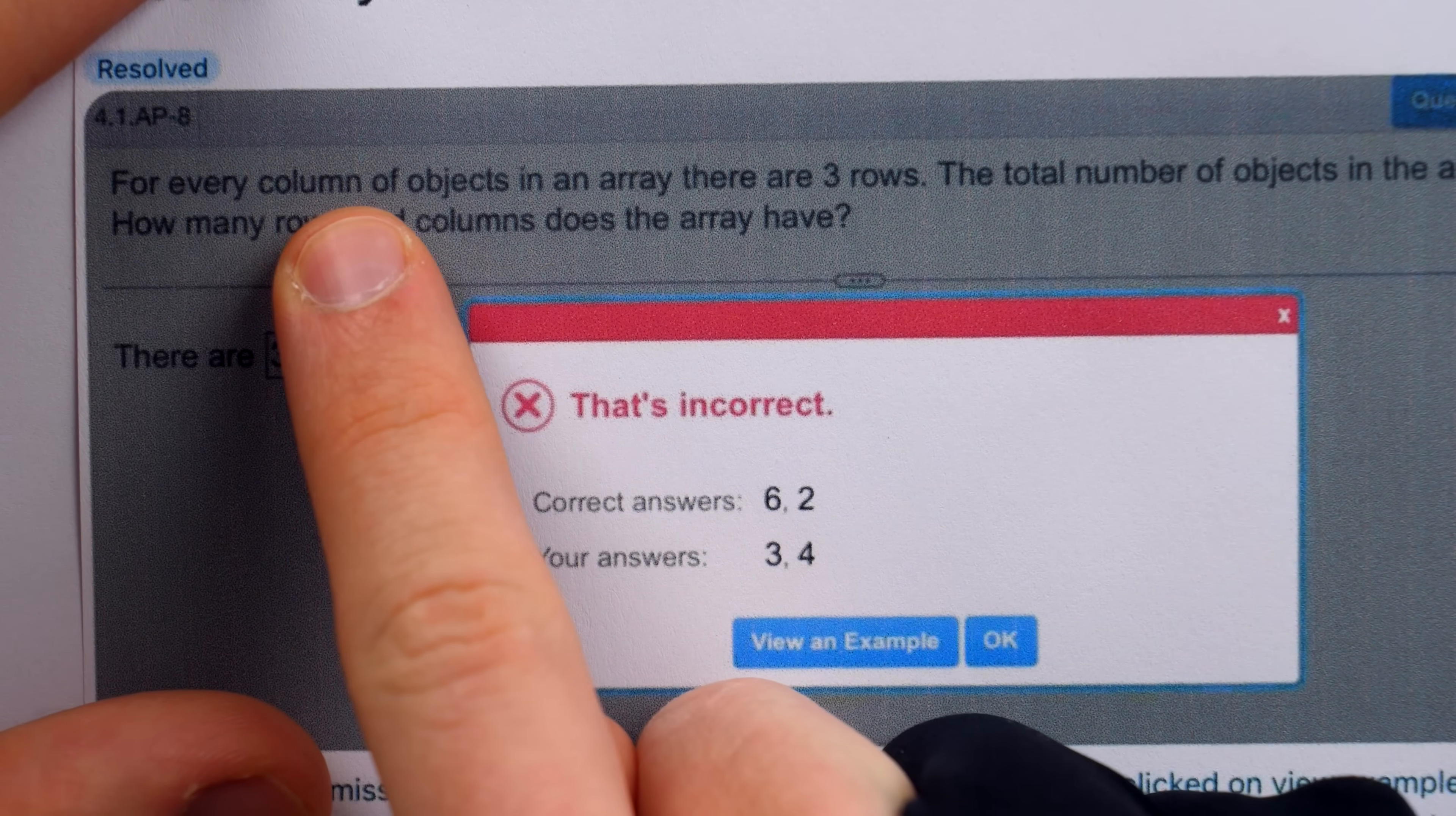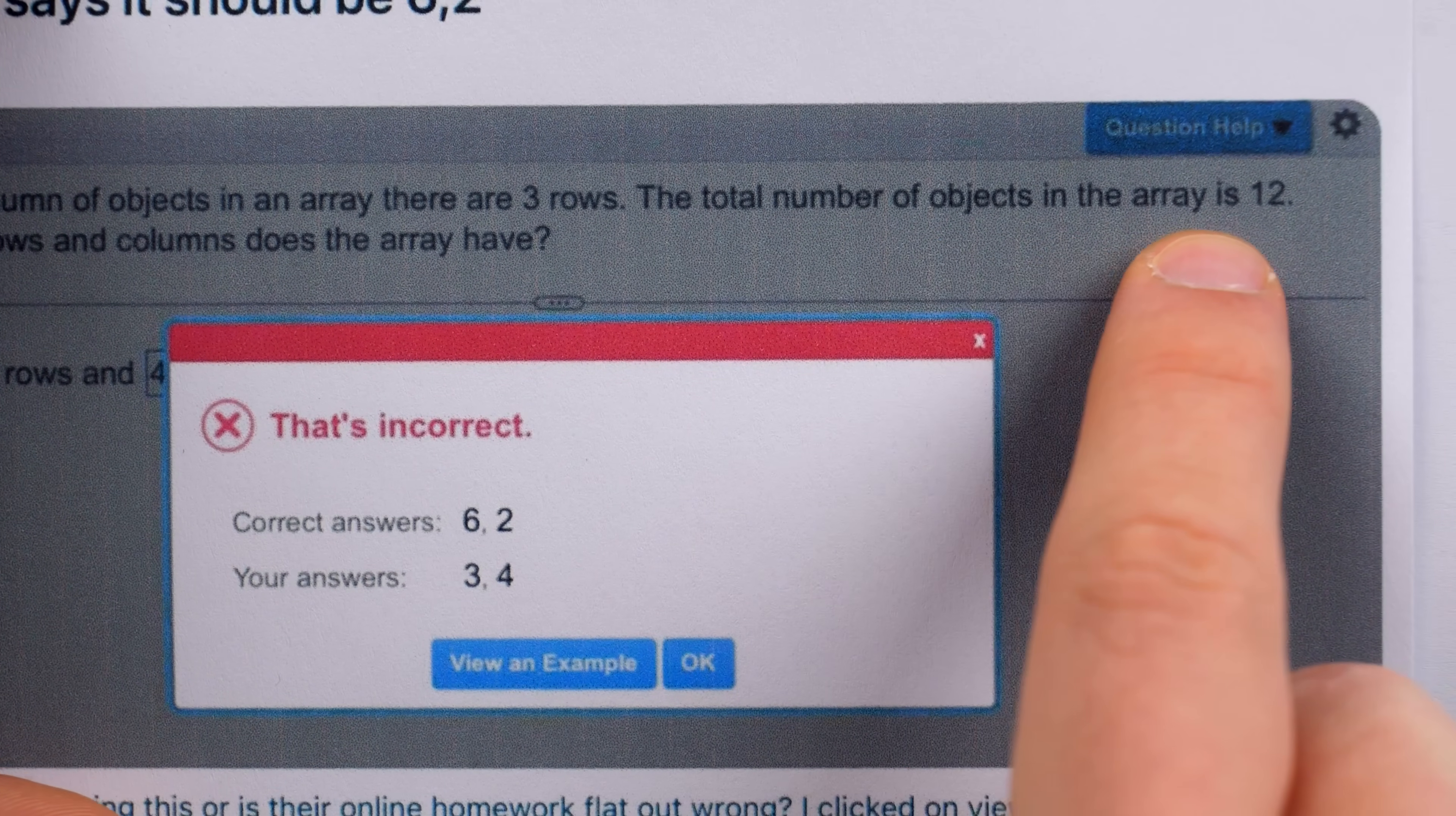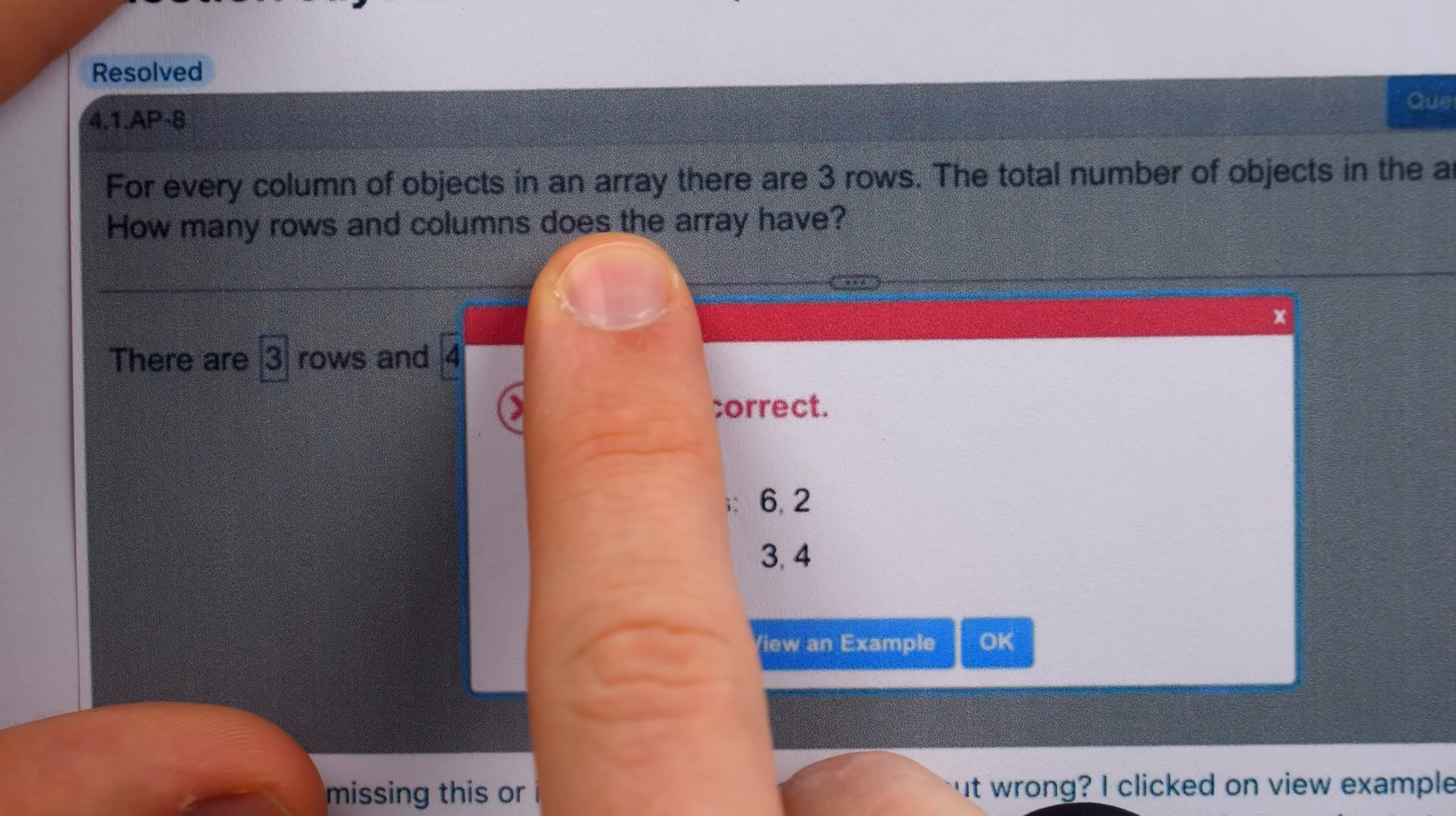Let's take a look at the question statement. It says, for every column of objects in an array, there are three rows. The total number of objects in the array is 12. How many rows and columns does the array have?